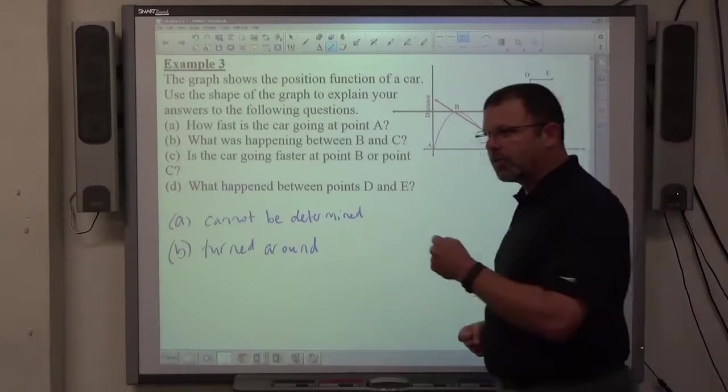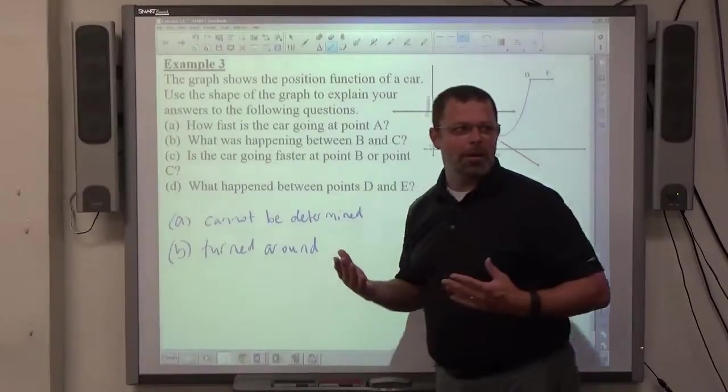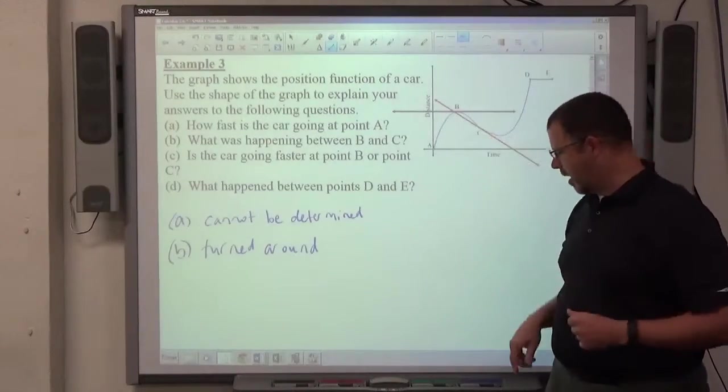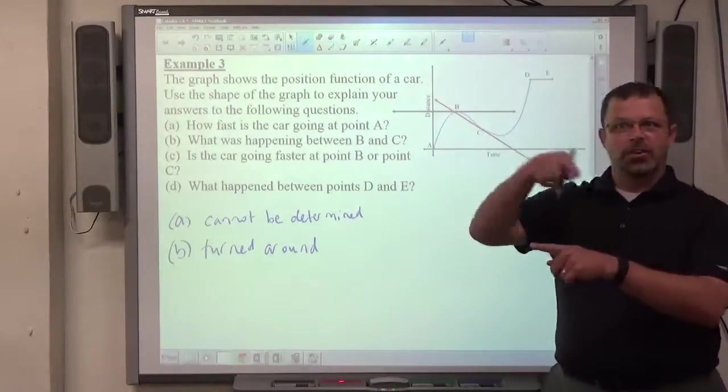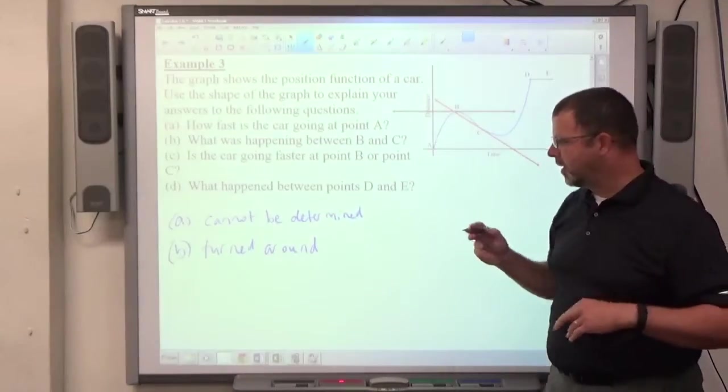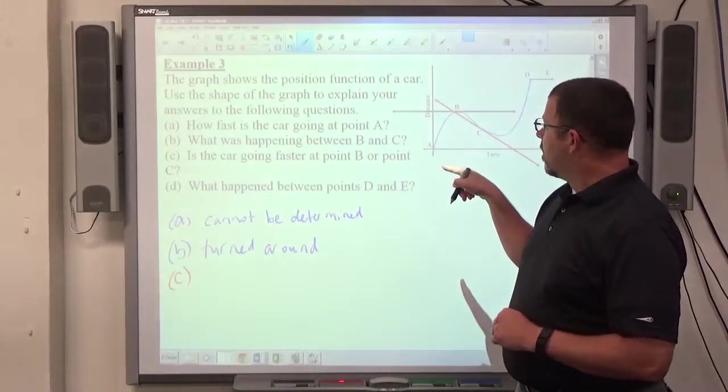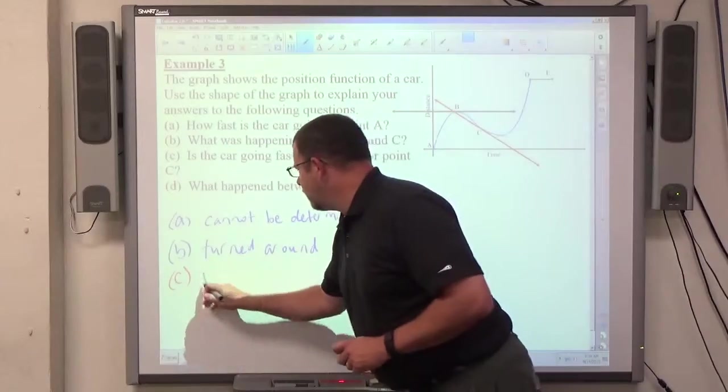You can't turn around without stopping. If I'm going this direction, and I can't start going that direction until I stop, then I've got to keep going back, right? So, on B, he stopped, and then he went backwards. I don't know if he actually turned his car around. Maybe he put it in reverse and going backwards. Maybe he's a stunt driver. I don't know. But he's going the other direction. So, C. Is the car going faster at point B or point C? Point C.